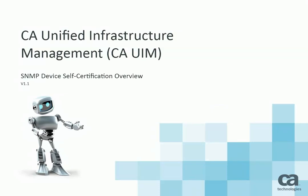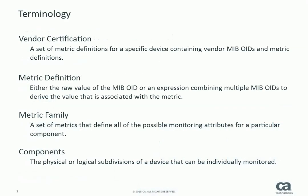Let's start with some definitions that will help you understand what a vendor certification is. Each vendor certification is a set of metric definitions for a specific device, containing vendor MIB OIDs and metric definitions. A vendor certification is associated with a metric family. A metric definition is either the raw value of the MIB OID or an expression combining multiple MIB OIDs to derive the value associated with the metric.